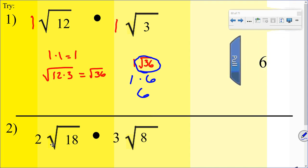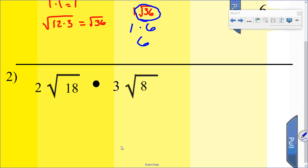So here's one for you. Try this one. 2 radical 18 times 3 radical 8. I'll give you a second, and see if you can get the answer. And remember, you don't have to simplify.